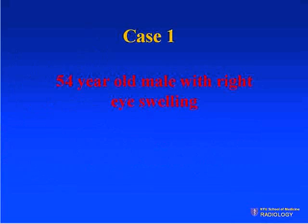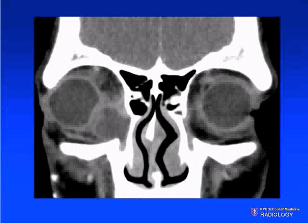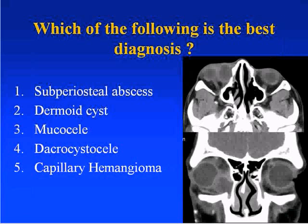The first case is a 54-year-old male with right eye swelling. Two images from a CT scan — a coronal image. Which of the following is the best diagnosis? Number one, a subperiosteal abscess; number two, a dermoid cyst; number three, a mucocele; number four, a dacrocystocele; and number five, a capillary hemangioma.